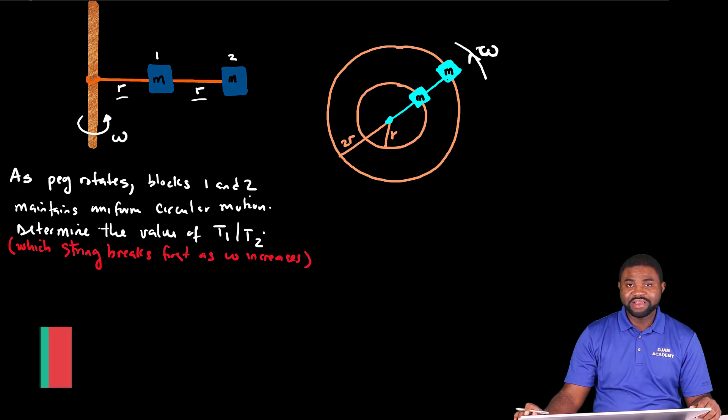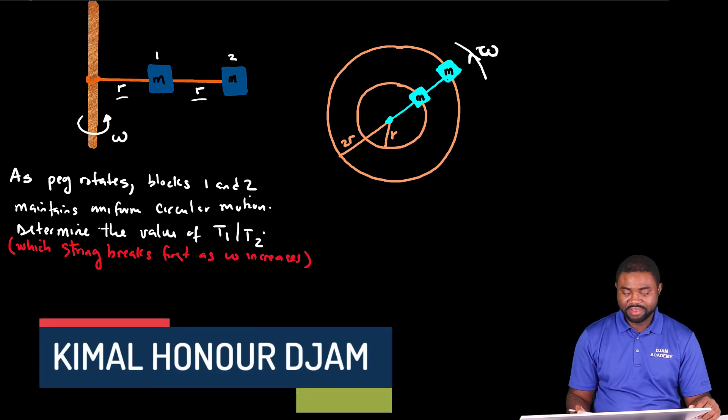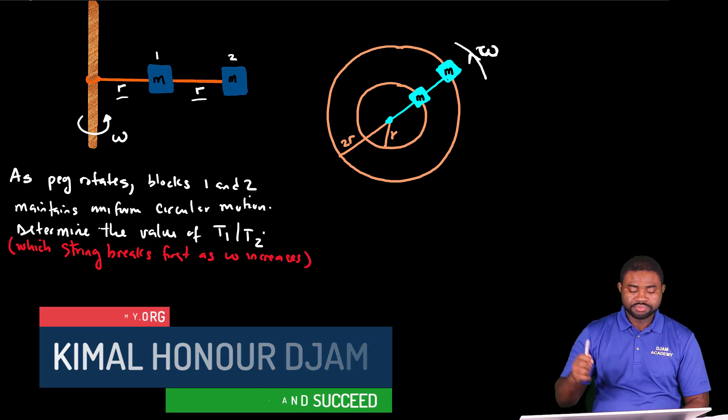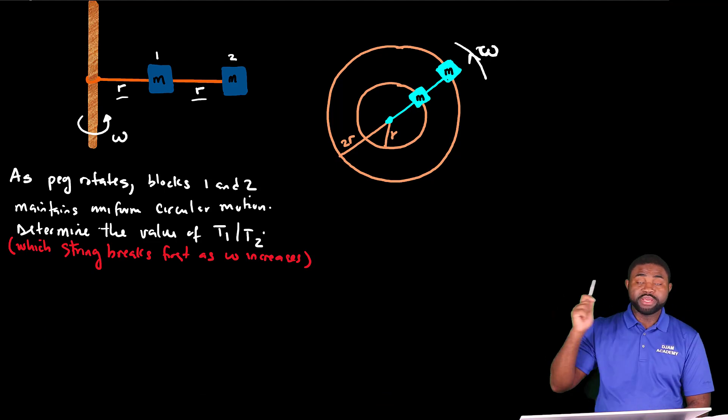Hello everyone and welcome to Jam Academy. In this problem, two blocks are connected by two strings and both blocks rotate around a peg.